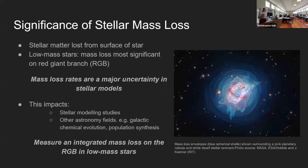Mass loss rates remain a major uncertainty in stellar models, and this impacts any study that uses stellar models, but it also impacts other astronomical fields such as galactic chemical evolution and population synthesis. So we really need to derive accurate mass loss rates to implement into our stellar models, and the first step is to measure the total amount of matter lost for low mass stars during the RGB phase.